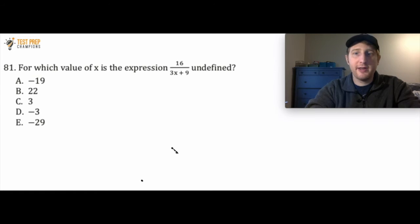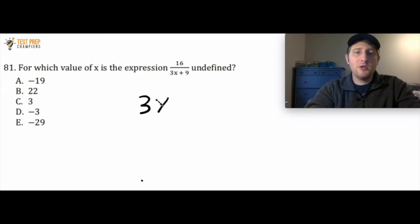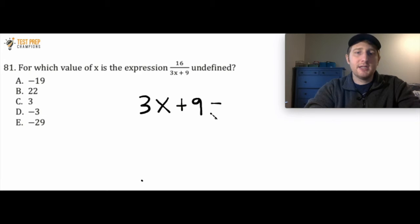Let's talk about this question. These questions oftentimes sound a lot more complicated than what they really are. All you want to do is take everything in the denominator of the fraction — the denominator is just everything in the lower part of the fraction. So this 3x plus 9. I'm going to set this equal to 0 and solve this equation for x.